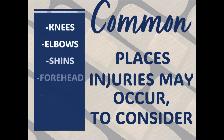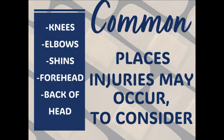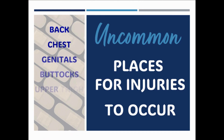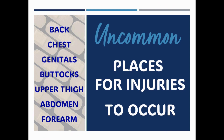Location of the injury is important to consider. Some places on the body are more prone to accidental injury. Injuries do not mean that abuse has taken place, and there should be documentation on the injury or incident. If there is no documentation, report it as abuse and neglect as injury of unknown origin. Common injuries can occur on the knees, elbows, shin, forehead, or the back of the head. Places on the body that are less common to have an accidental injury include the back, chest, genitals, buttocks, upper thigh, abdomen, and forearm. When considering placement of injury, it is important to consider the person's baseline, their behaviors or behavior plan, and any documentation.